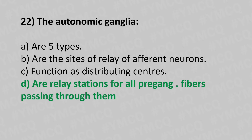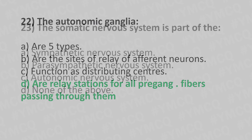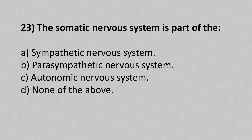Question 23: The somatic nervous system is a part of — Option A: sympathetic nervous system. Option B: parasympathetic nervous system. Option C: autonomic nervous system. Option D: none of the above. The answer is Option D — none of the above.